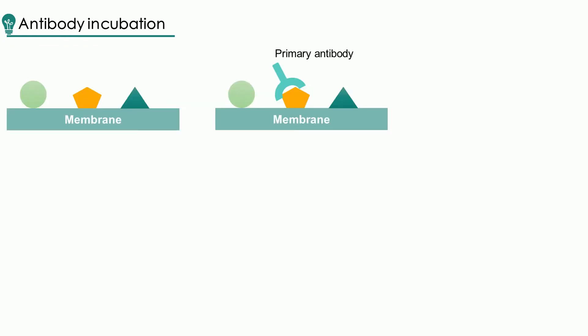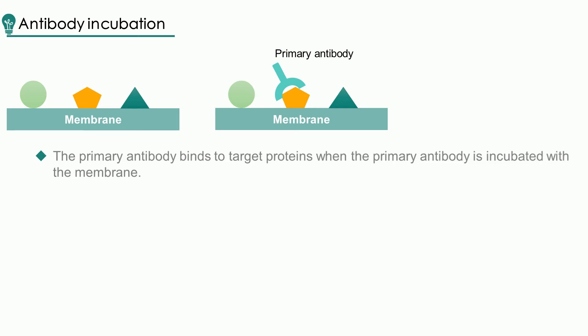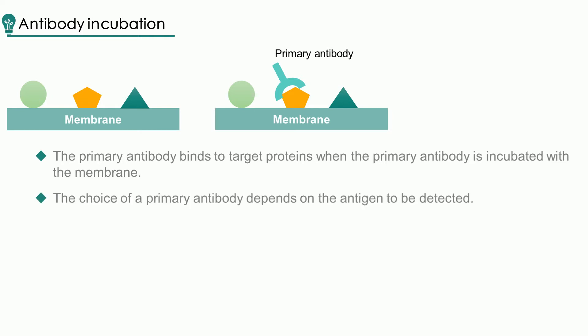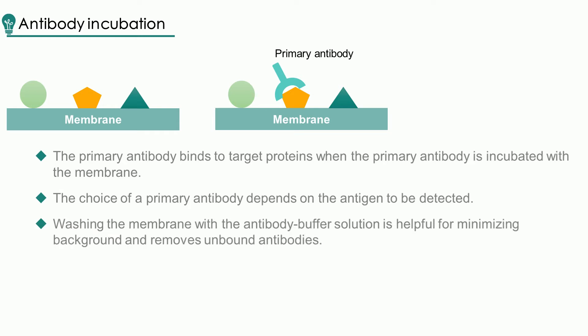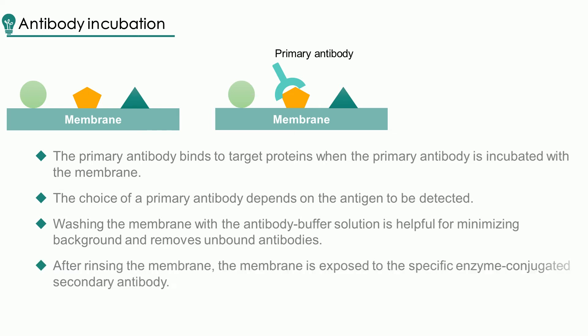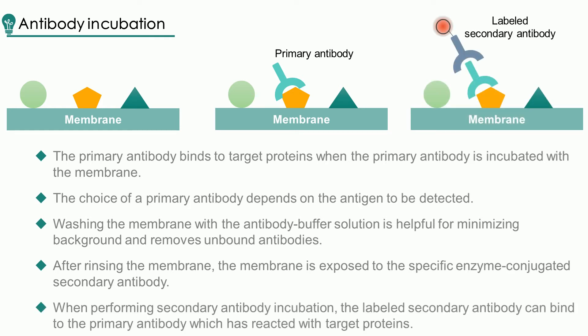After blocking, the primary antibody binds to the target protein when incubated with the membrane. The choice of primary antibody depends on the antigen to be detected. Washing the membrane with antibody buffer solution is helpful for minimizing background and removes unbound antibodies. After rinsing the membrane, it is exposed to the specific enzyme-conjugated secondary antibody. The labeled secondary antibody can bind to the primary antibody which has reacted with the target proteins. Based on the species of the primary antibody, we can choose the appropriate secondary antibody.